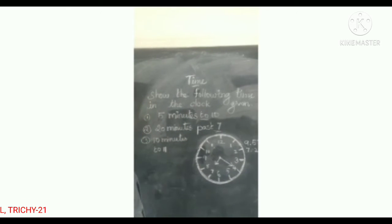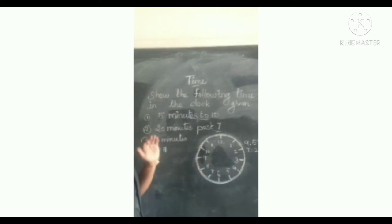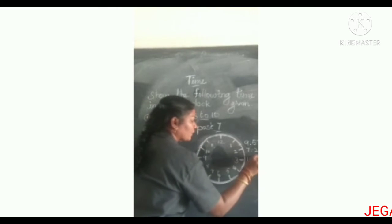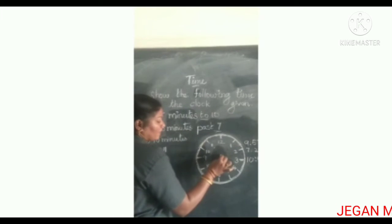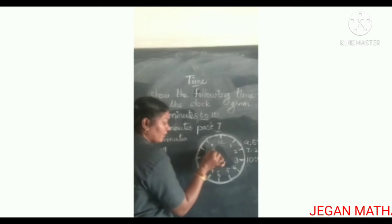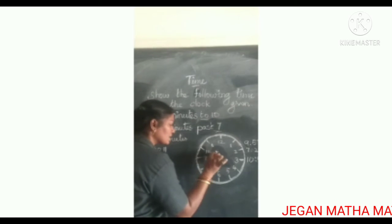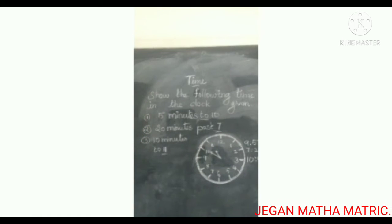Third one: ten minutes to eleven. The same thing. First, draw the hour hand — not ten, but eleven — ten minutes remaining. The time is ten fifteen. Draw the hour hand near the ten or near the eleven, in between. Then draw the minute hand on the ten. So the time is ten fifteen.